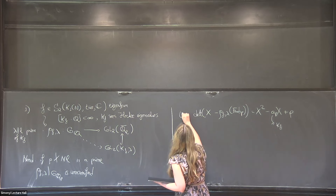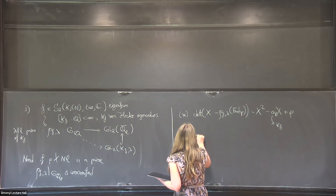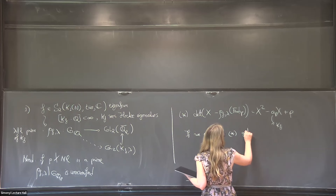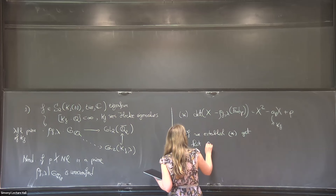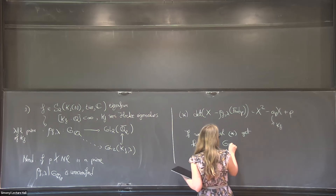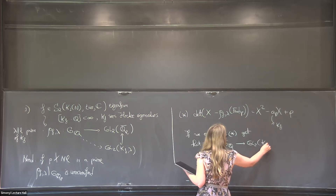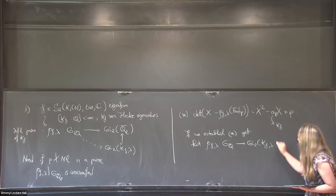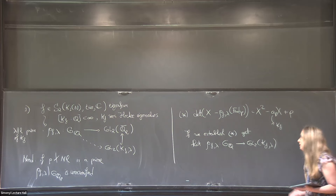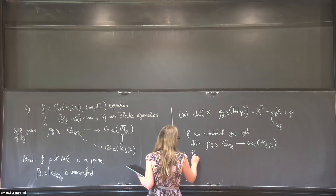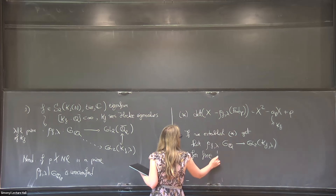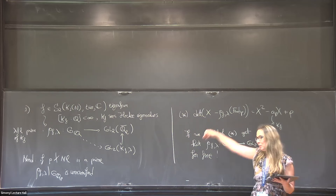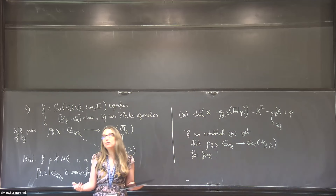Once we've established this, the Chebotarev density theorem and the fact that we're pinning down the traces of these matrices — and these traces are elements of the number field K_F — will tell us that this representation factors as we want it to factor. So a bit of linear algebra and representation theory, together with Chebotarev, lets us conclude this. So if we establish this key relationship, we get that rho_F_lambda lands in GL2 of K_F_lambda. And this is where the geometry really comes in.